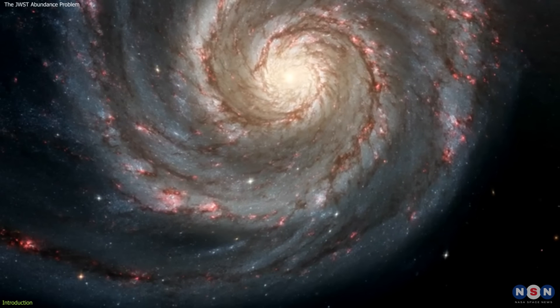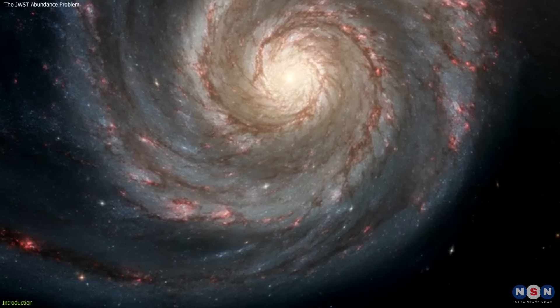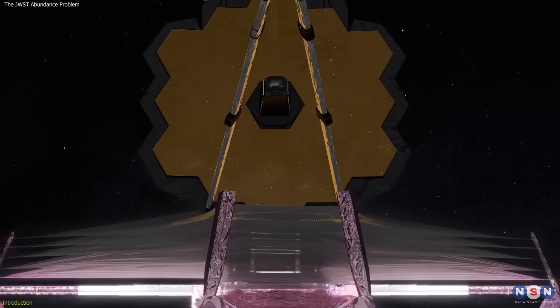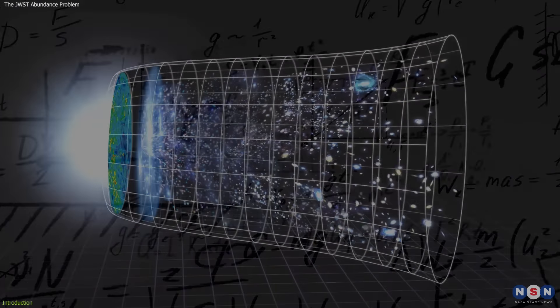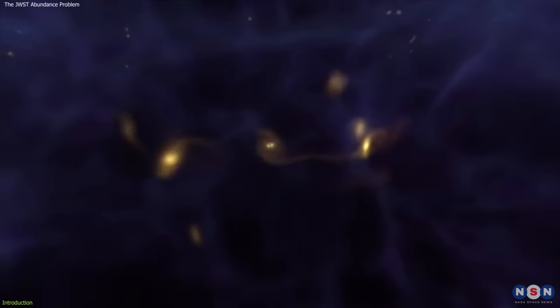How can we explain these ultramassive galaxies? Are they real, or just artifacts of the James Webb measurements? Do they require new physics beyond the standard model? Or can they be explained by some unknown processes of galaxy formation and evolution?